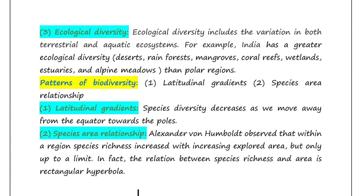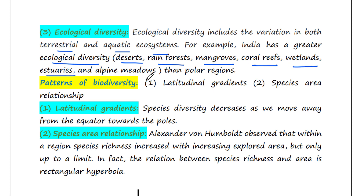Ecological diversity includes the variation in both terrestrial and aquatic ecosystems. For example, India has a greater ecological diversity — it has deserts, rainforest, mangroves, coral reefs, wetlands, estuaries, and alpine meadows. That is great diversity in respect to ecological systems. In contrast, polar regions have very few ecosystems present.